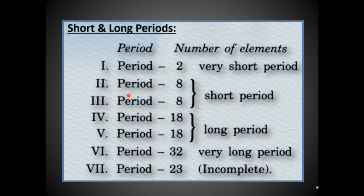Periods and number of elements per period: the first period has only two elements, considered a very short period. The second and third periods contain eight elements each, considered short periods. The fourth and fifth periods have 18 elements each, considered long periods. The sixth period has 32 elements, considered a very long period. The seventh period is still incomplete, having only 23 elements.